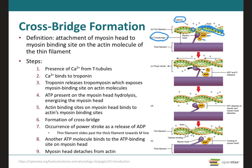After the cross-bridge forms, we have what is called the power stroke. During the power stroke, the site on the cross-bridge where ADP is still bound will open. As a result, the cross-bridge rotates and releases this ADP, generating enough force as it rotates toward the center of the sarcomere. This causes the sliding of the thin filament past the thick filament toward the M line, toward the middle of the sarcomere. At the end of the power stroke, the cross-bridge remains firmly attached to the actin until it binds another molecule of ATP.